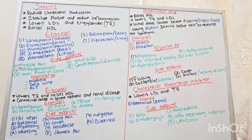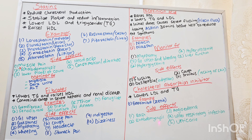Now let's discuss cholesterol absorption inhibitors. They lower LDL and triglycerides. An example is Zetia. Side effects are rash, rhabdomyolysis, angioedema, upper respiratory infection, and urticaria.